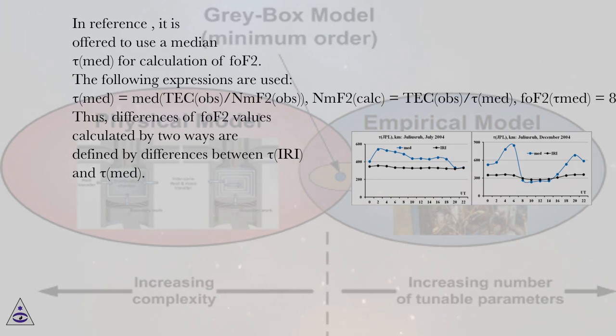In reference, it is offered to use a median tau MED for calculation of FOF2. The following expressions are used: tau MED equals median TEC OBS slash NMF2 OBS, NMF2 calc equals TEC OBS tau MED, FOF2 tau MED equals 8.97 SQRT NMF2 calc.